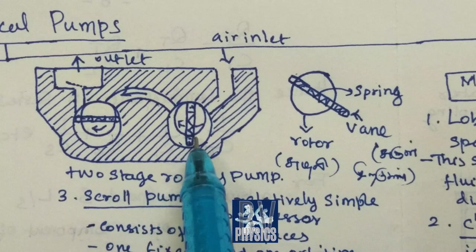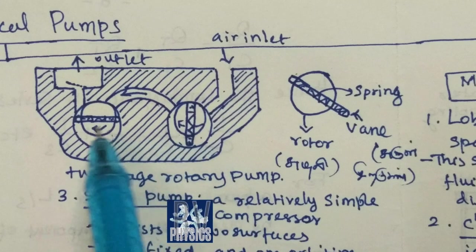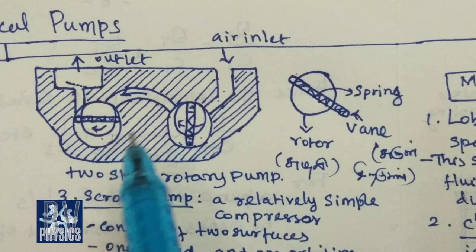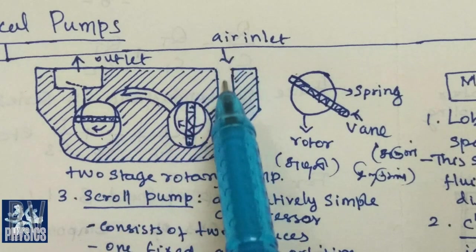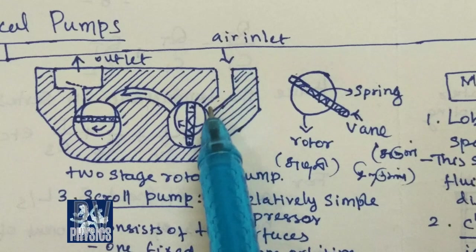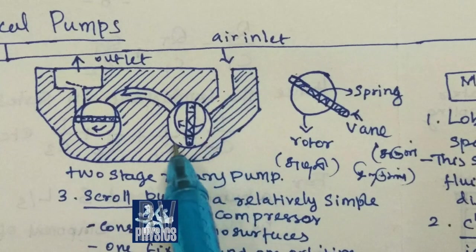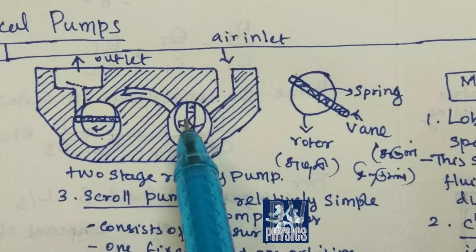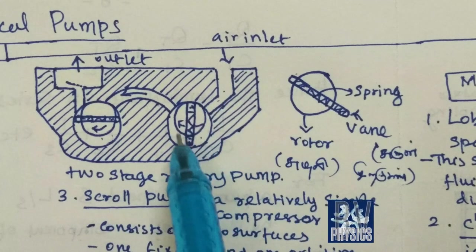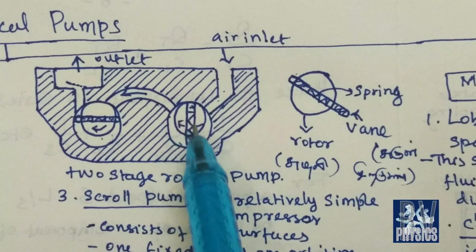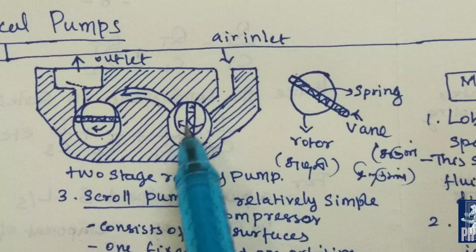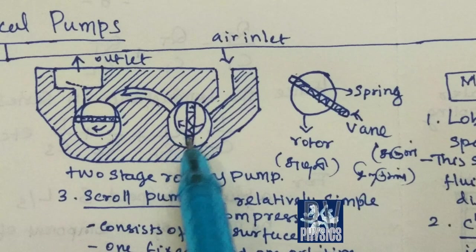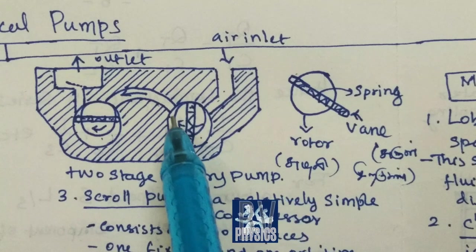This is the rotary. If you want air in, you need to fill the rotor and rotate. Then the rotor will be compressed and you need to let the gap out.